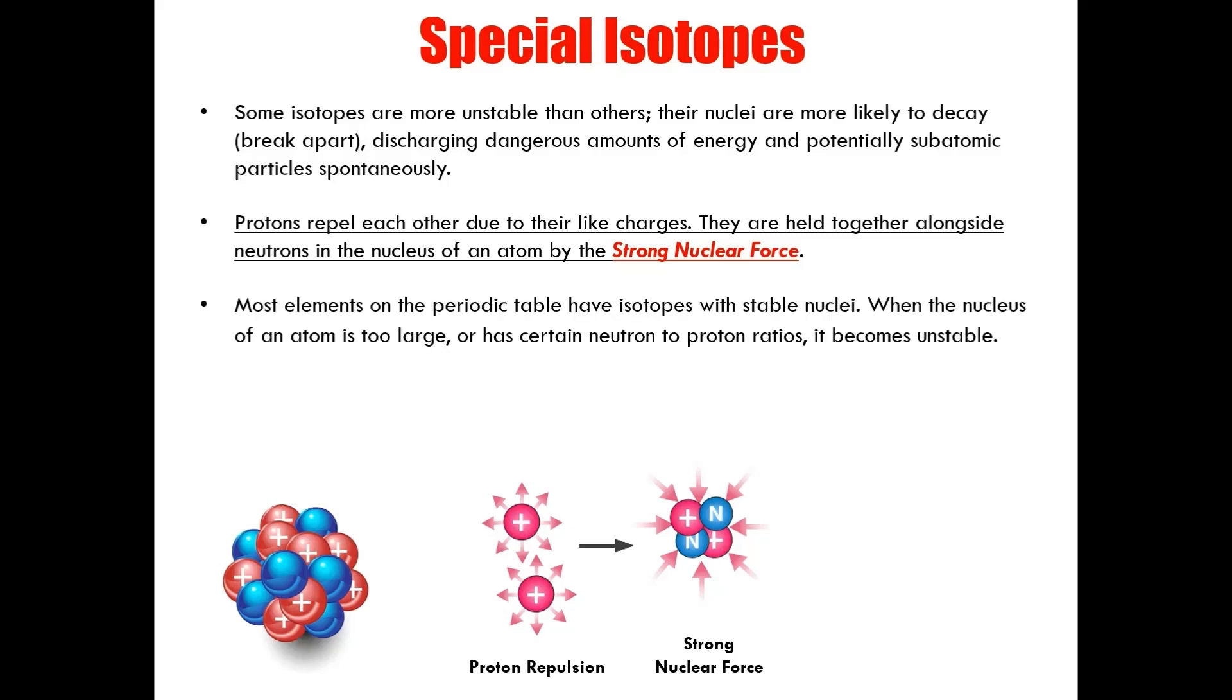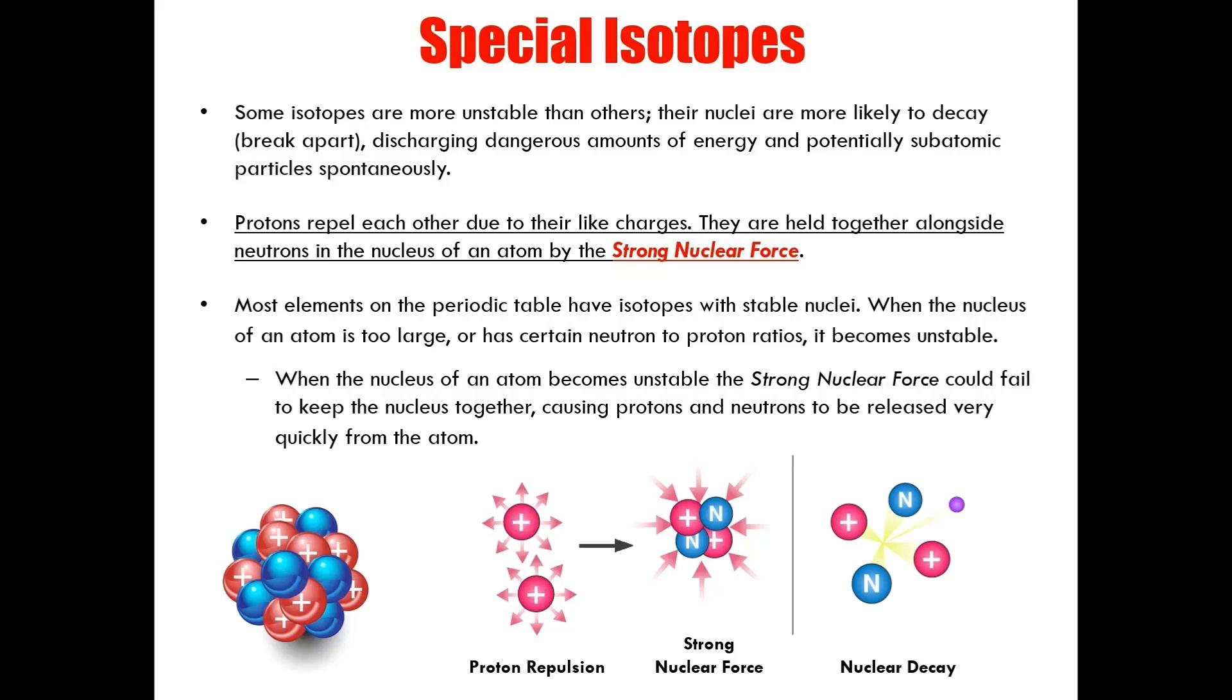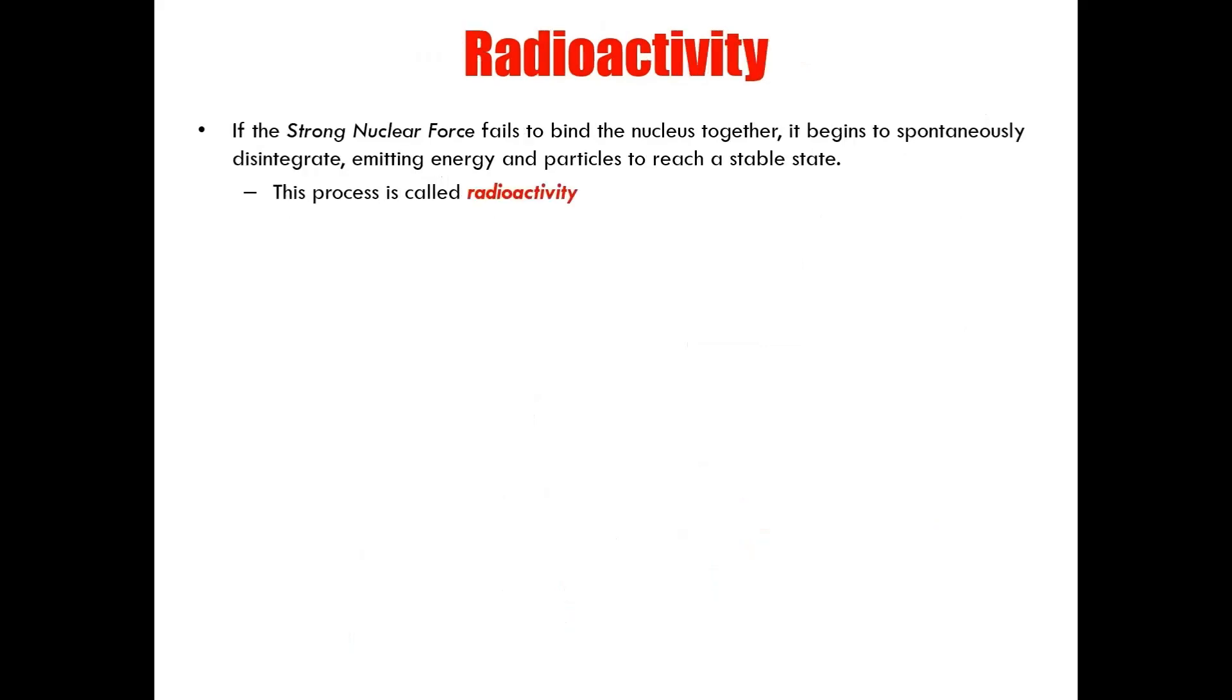Now, although most elements on the periodic table have isotopes with stable nuclei, when the nucleus of an atom is too large or has certain neutron to proton ratios, it becomes unstable. When the nucleus of an atom becomes unstable, the strong nuclear force could fail to keep the nucleus together, causing protons and neutrons to be released very quickly from the atom. If the strong nuclear force fails to bind the nucleus together, it begins to spontaneously disintegrate, emitting energy and particles in an attempt to reach a stable state. This process is called radioactivity.